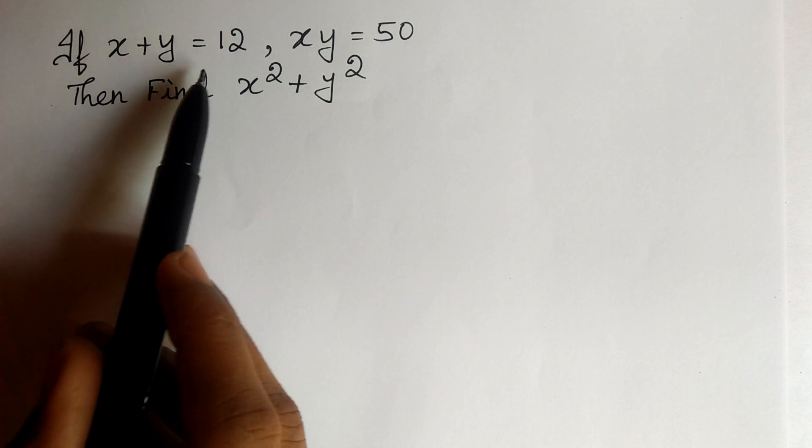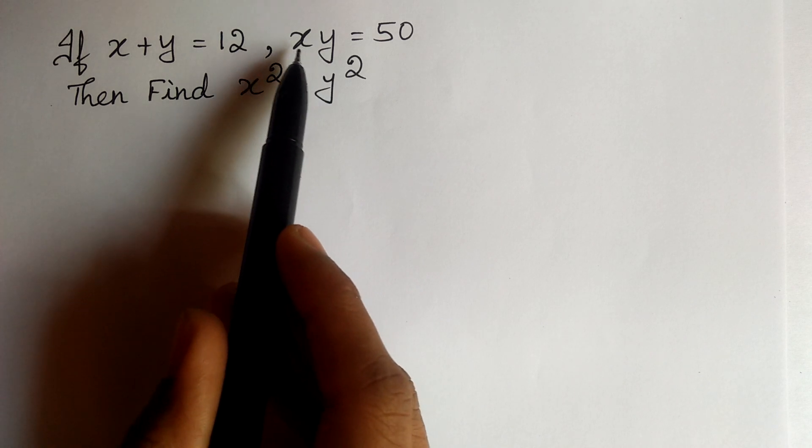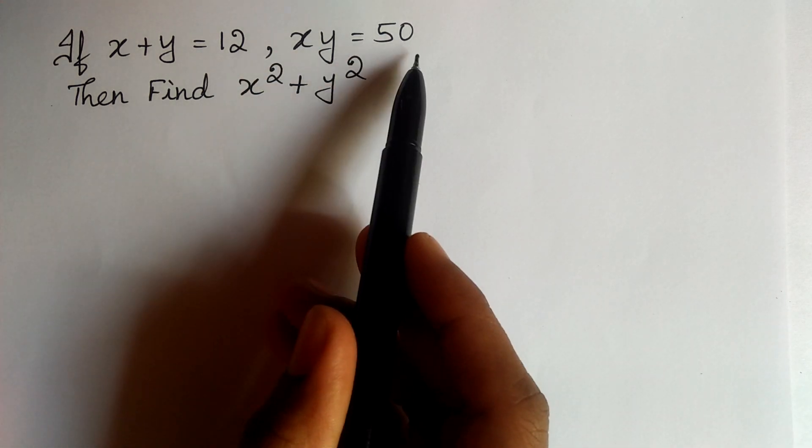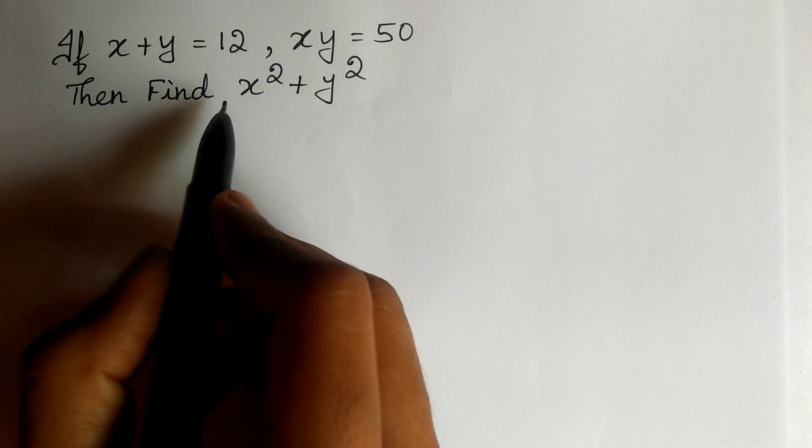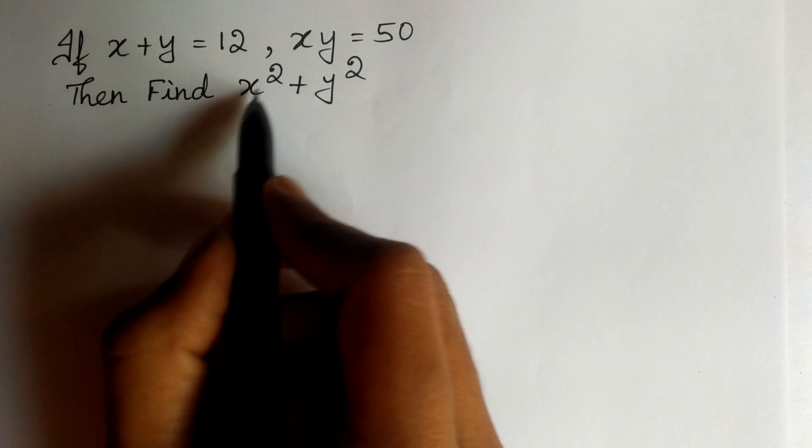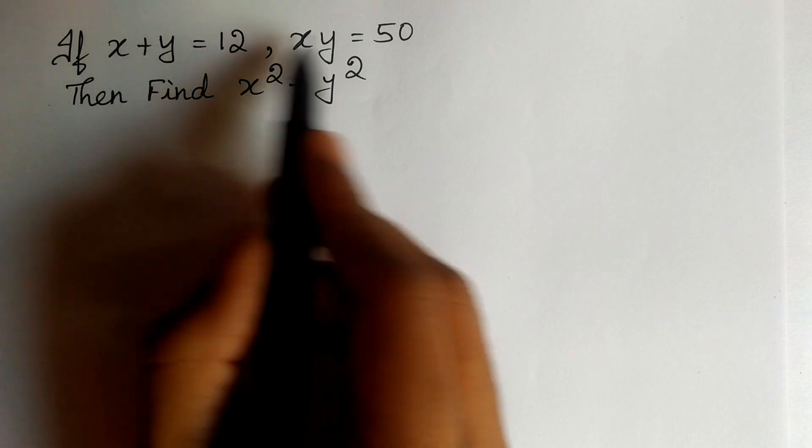If x plus y is equal to 12 and xy is equal to 50, then find x square plus y square. We need to find the value of x square plus y square with the given data.